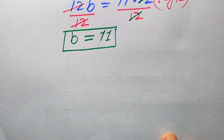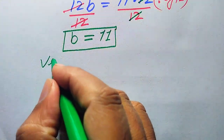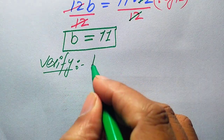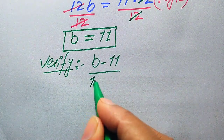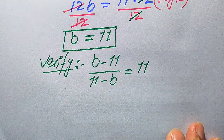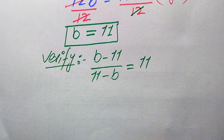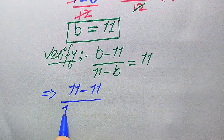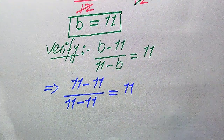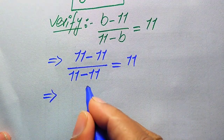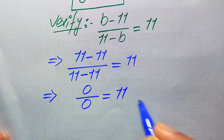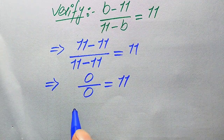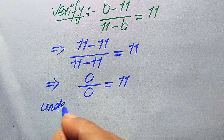Next, we verify whether b equals 11 is a valid solution or an extraneous root. We copy down the given equation: (b minus 11) divided by (11 minus b) equals 11, and substitute b equals 11. This gives (11 minus 11) divided by (11 minus 11), which is 0 over 0 — an indeterminate or undefined form.